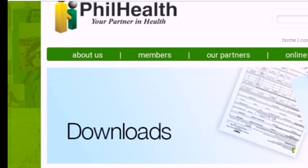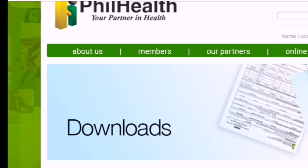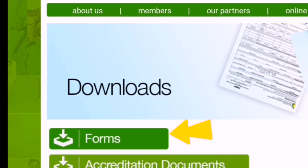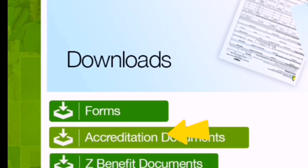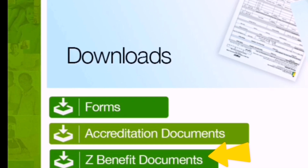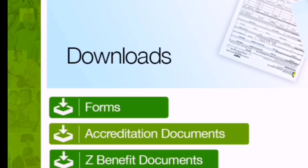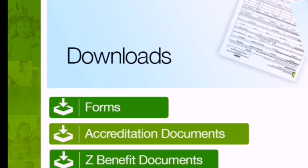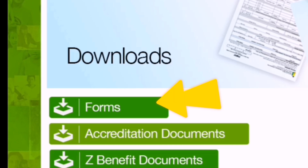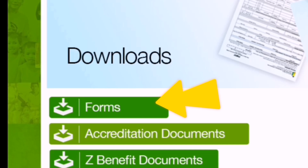Under Downloads, you will find: Forms, Accreditation Documents, Z Benefits Documents, and IEC at the bottom. For our purpose, we need Forms — click Forms at the top.